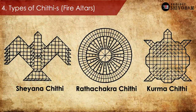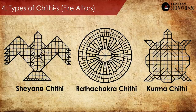Number four is the types of Chitis, or fire altars, in Sulbhasutras — the most complex aspect. Initially we saw the Tretagni in square, circle, and semicircle, which are relatively simple geometrical shapes. But for other Vedic rituals, there are much more complex fire altars that need to be constructed. They are not monoliths — they are arrangements of bricks cut to precision, as you can see on screen. The blueprints include Shena Chiti, Radha Chakra Chiti, Kurma Chiti, and many more.